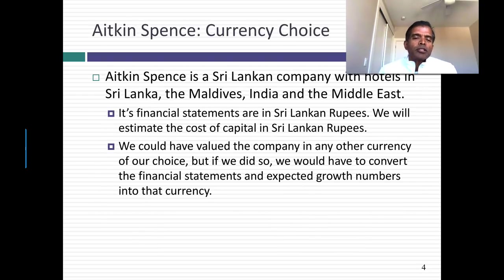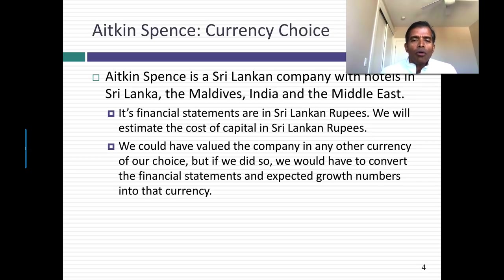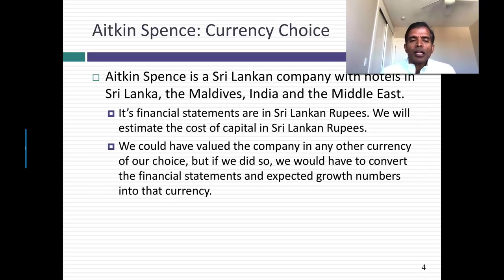The company I'm going to use as my lab experiment to illustrate this process is a company called Aitken Spence. It's a Sri Lankan hotel company with holdings in other businesses as well. The financials for the company and the annual report are all in Sri Lankan rupees, so I'm going to choose to do the analysis in Sri Lankan rupees. If I run into serious issues, I'll revisit this choice — I could have done the analysis in US dollars, Indian rupees, or euros. But my currency choice is going to be Sri Lankan rupees.